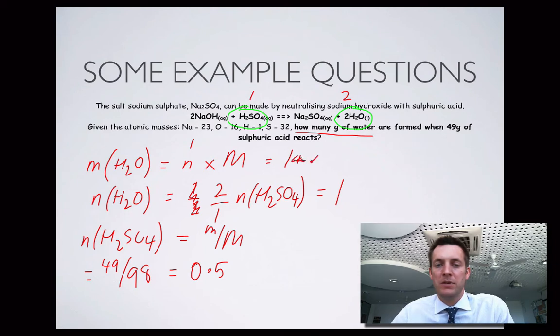Not plus but times 18. I'm rounding here so let's not round. Let's be good about this and say it's 18.016. That's 18.016 grams. So that's how we do a reacting mass calculation.